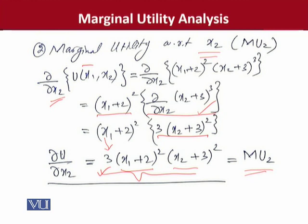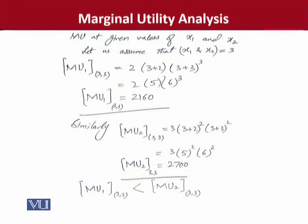We can safely say that we have the marginal utility of variable x2. This is how we can calculate the marginal utilities using partial derivatives. For example, if we have the values of x1 and x2, we can substitute them to find the numerical results of MU1 and MU2. Assuming x1 = 3 and x2 = 3, we substitute into the MU1 expression. We now have a numerical result for MU1, and the marginal utility of x1 is positive — meaning we can consume more of it.